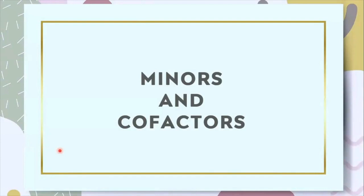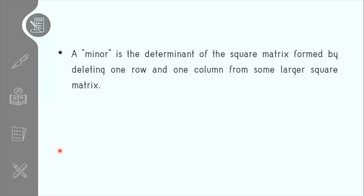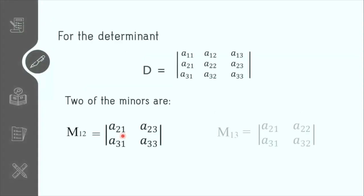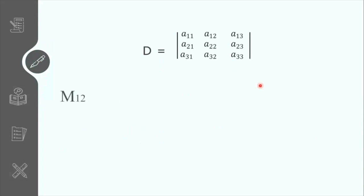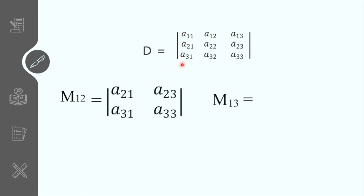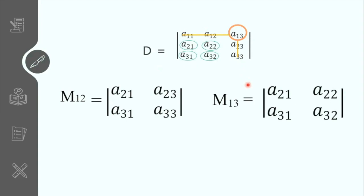Next, let us discuss minors and cofactors. A minor is a square matrix formed by excluding or deleting the row and column where the reference element is located. For example, to find the minor of element A12, located at the first row, second column, we eliminate the first row and second column, and the remaining elements become its minor. Similarly, for element A13 at the first row, third column, we eliminate those, and the remaining elements form its minor.